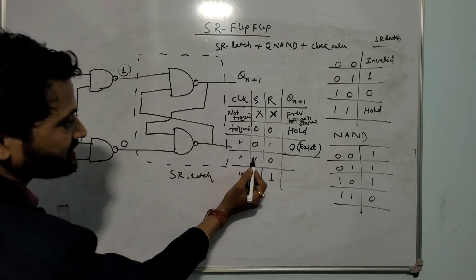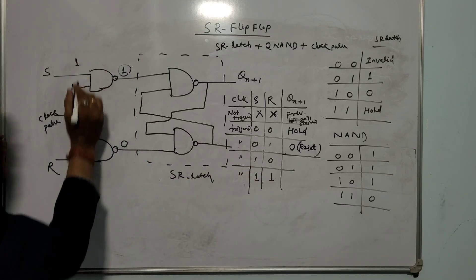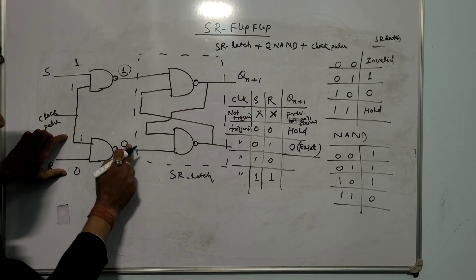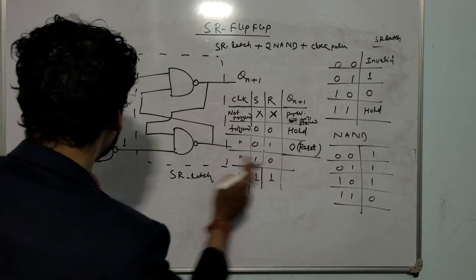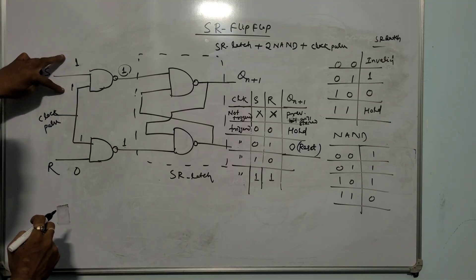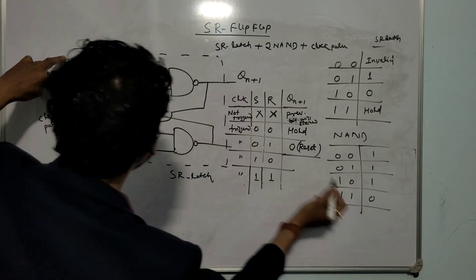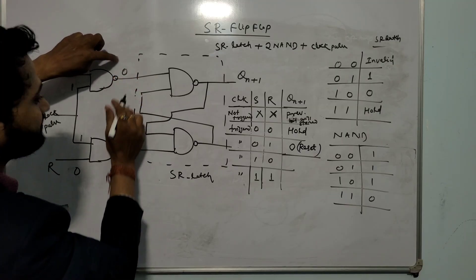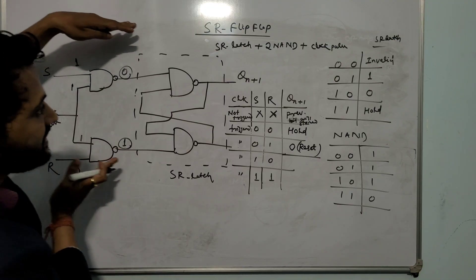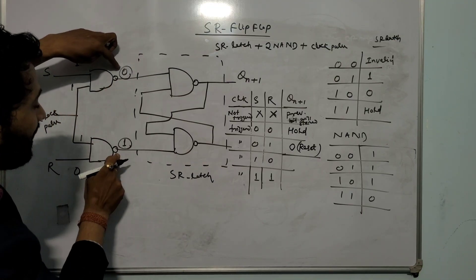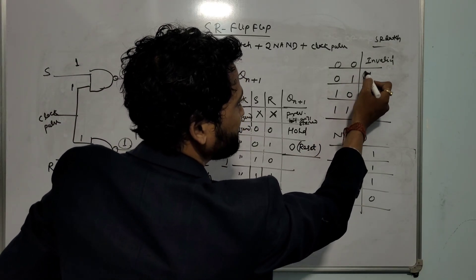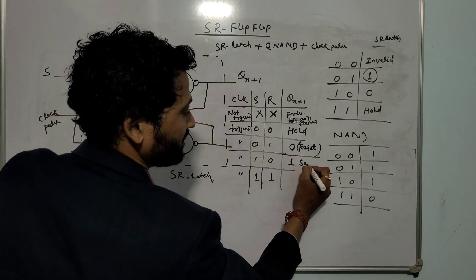Third combination: S=1, R=0. Here any one of the inputs is 0, so NAND gate output is 1. But for the other NAND gate, both inputs are 1 — output is 0. So 0,1 is given to the SR latch. From the SR latch table, input 0,1 gives output 1 — that means it is set.